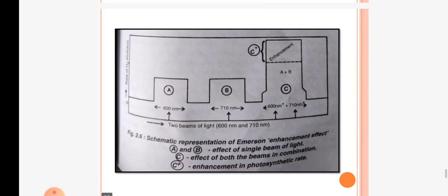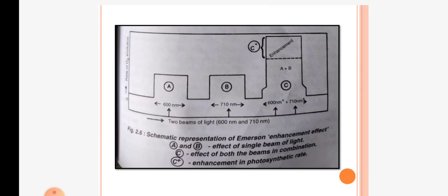This figure shows: A and B — the effect of a single beam of light; C — the effect of both beams in combination; and C+ — the enhancement in photosynthetic rate when there was a combination of both beams.